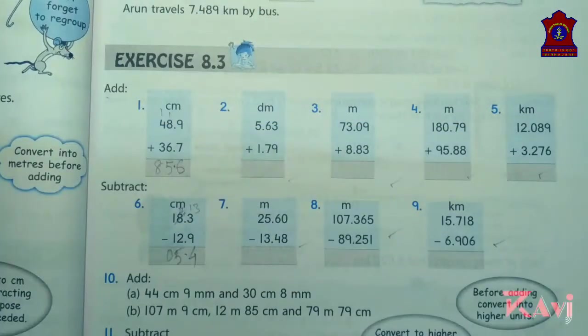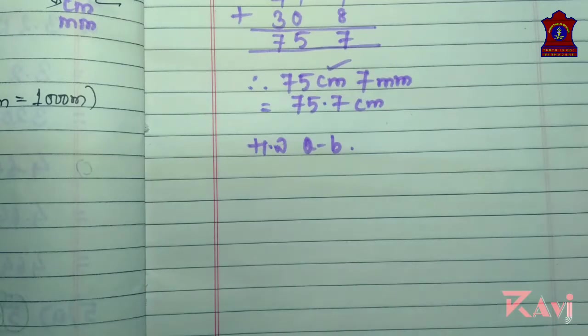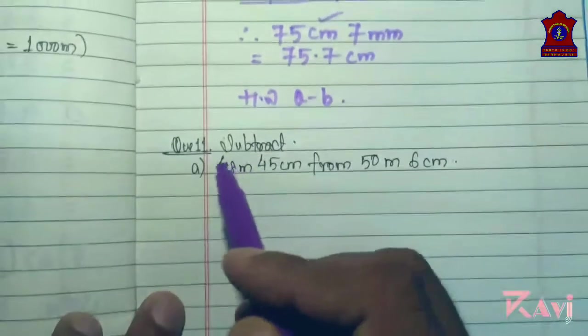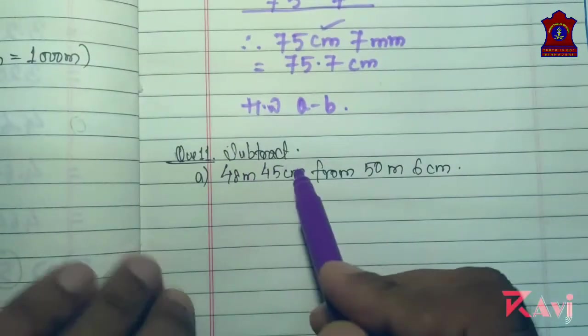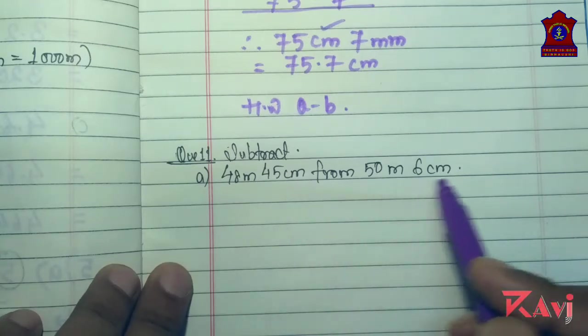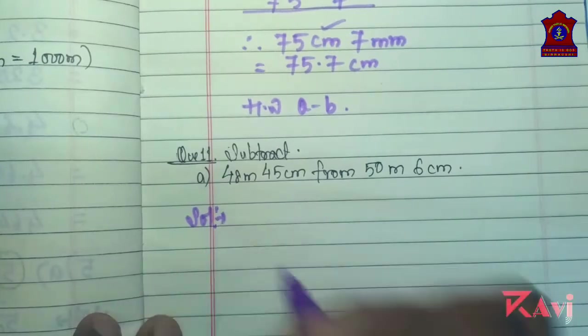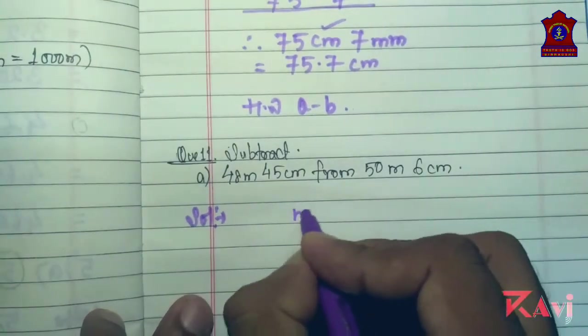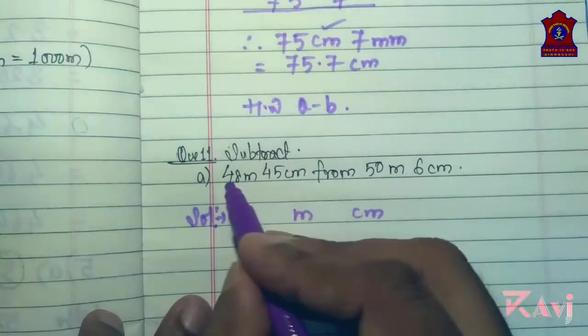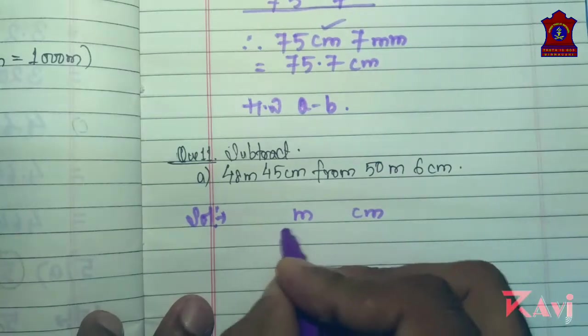Now we will do question number 11. Subtract 48 meter 45 centimeter from 50 meter 6 centimeter. See here also we will arrange in column first. Meter column, centimeter column.